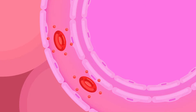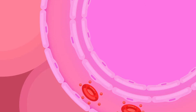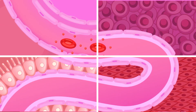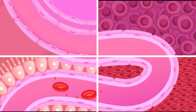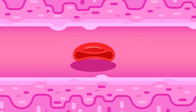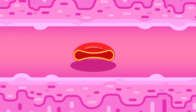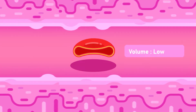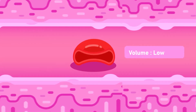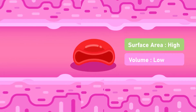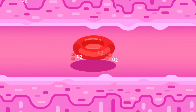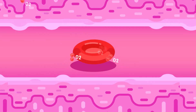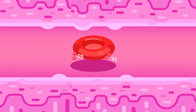The red blood cell in animals contains a red pigment called haemoglobin that enables the cell to transport oxygen from the lungs to all parts of the body. The cells have a circular biconcave shape, which means a narrower inner portion to help increase the cell surface area to volume ratio. Thus, the diffusion of oxygen from and into the cell will be faster.